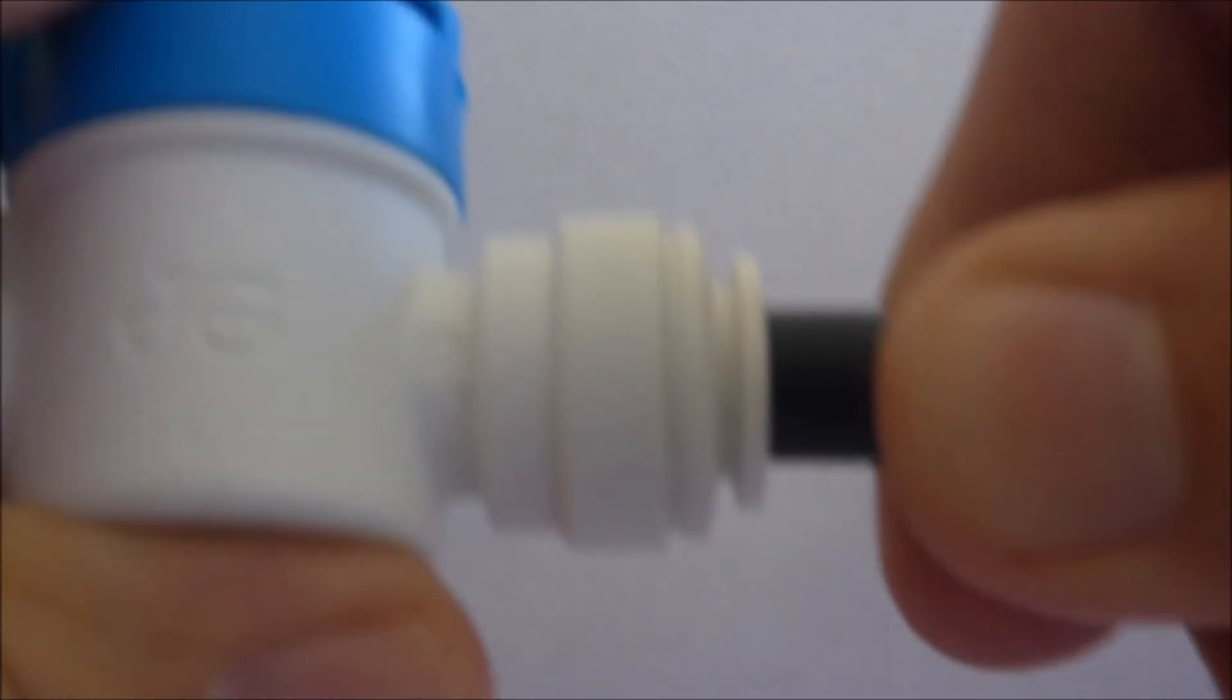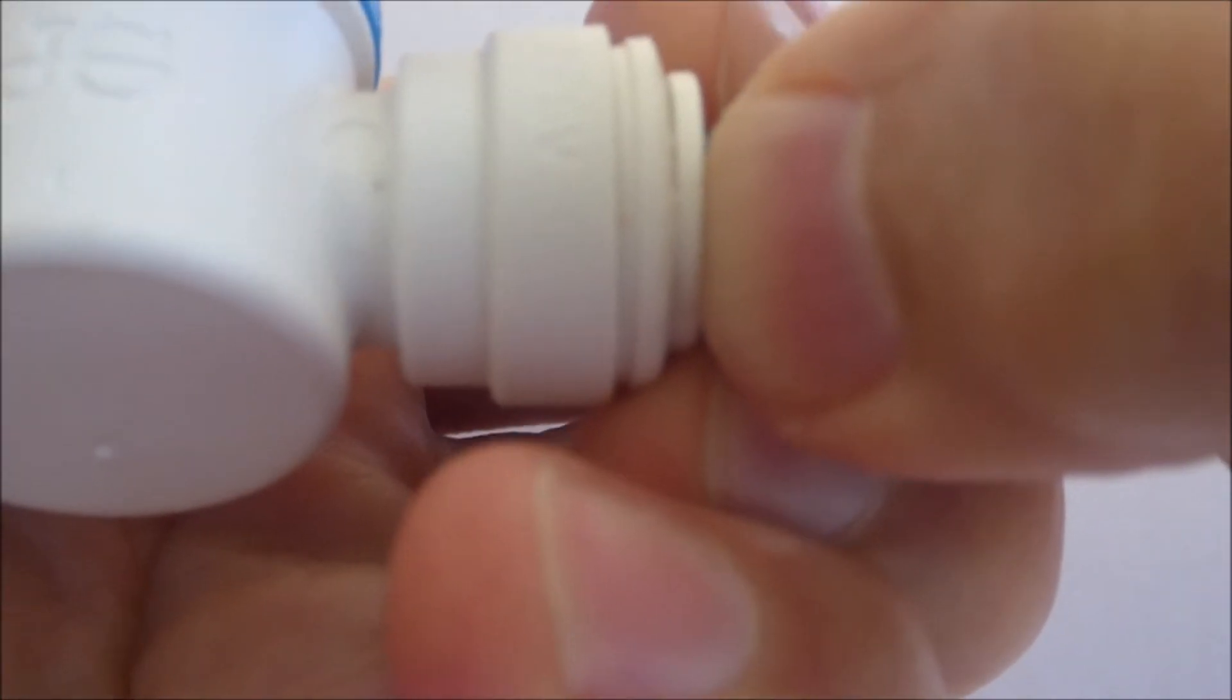Now it's in and you cannot pull that tubing out unless you pull this locking ring back in. Then you can pull the tubing out.